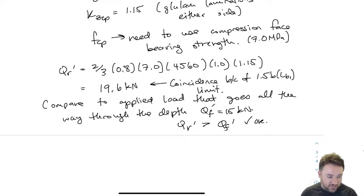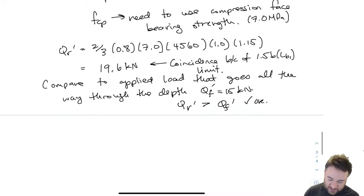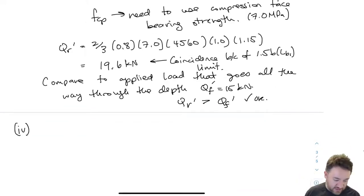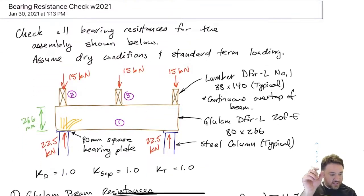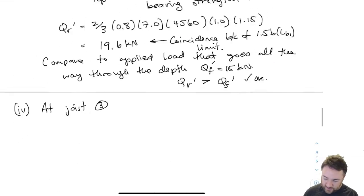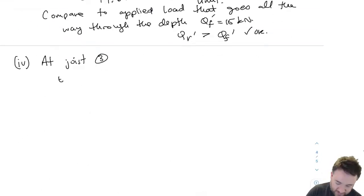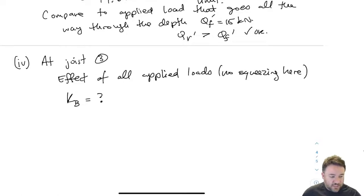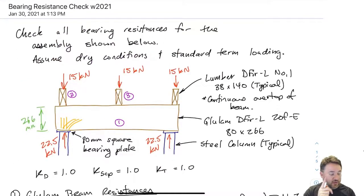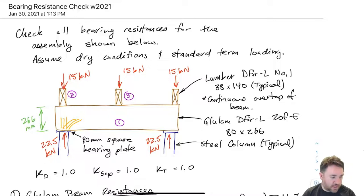We have one more check for the beam — at joist three, which is towards the center of the beam. At joist three we only need to check the effect of all applied loads, not squeezing, because at the point of application of joist three, there is no other force on the bottom of the beam within D (the depth of the beam) along the beam length.